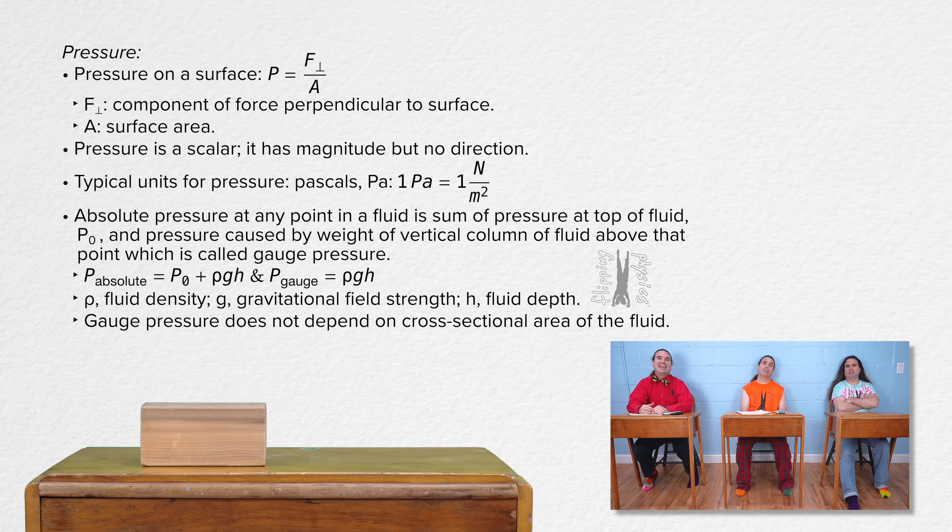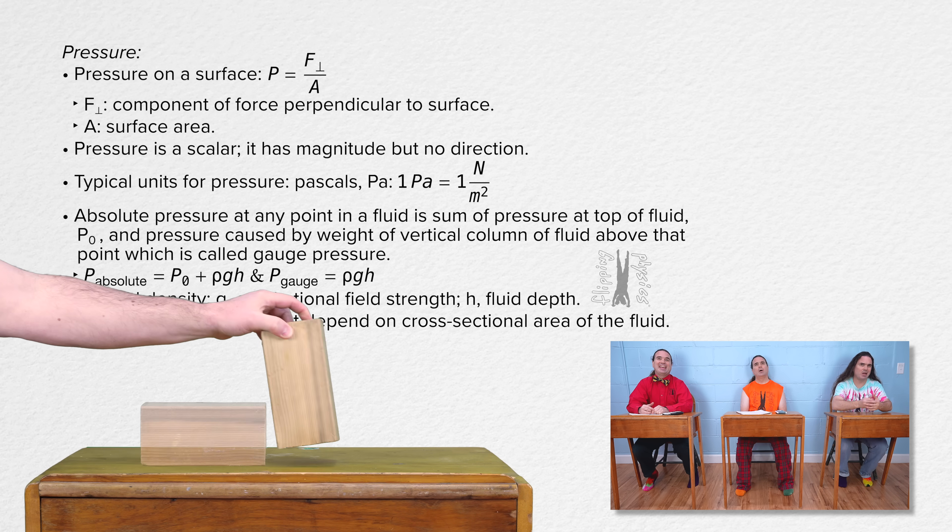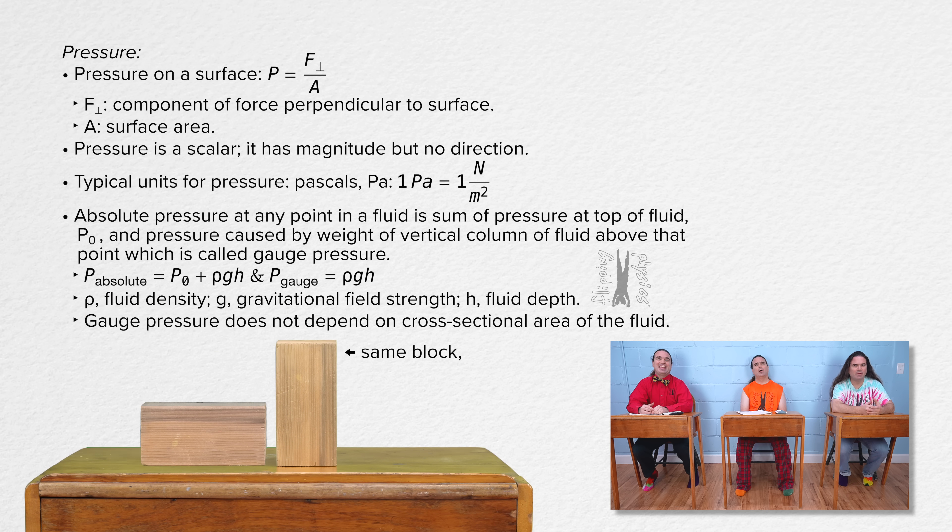Hold up. If I take a rectangular block that is resting on a table and rotate it so a smaller side of the block is in contact with the table, the weight of the block does not change, so the force causing the pressure from the block on the table stays the same. However, the contact surface area of the block with the table is decreased, so the pressure from the block on the table is now greater. But I thought you just said pressure does not depend on the area.